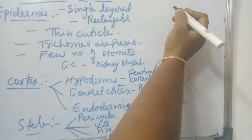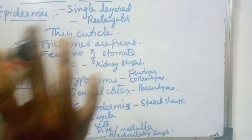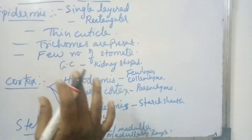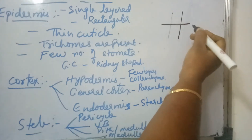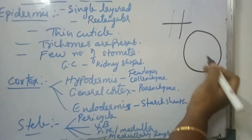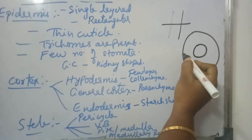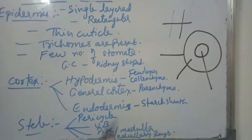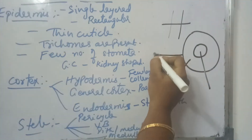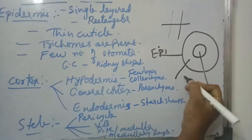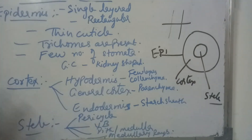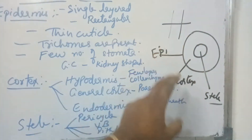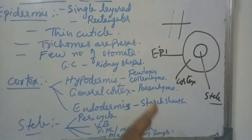If you take a dicot stem, what are the different parts we will be able to see? In anatomy, means transverse section. If you take a transverse section of a dicot stem, we will be able to see three distinct zones: epidermis, cortex, and stele.